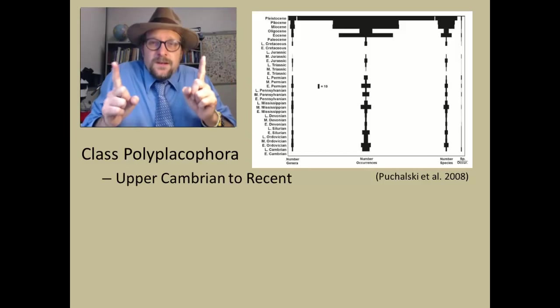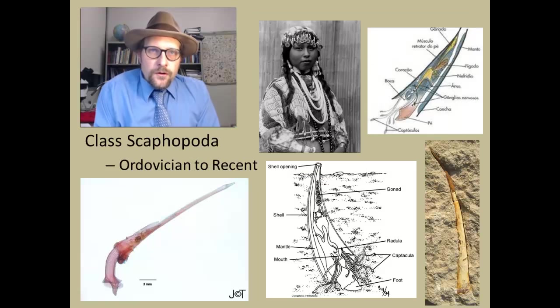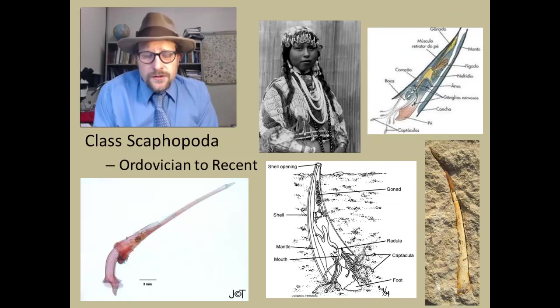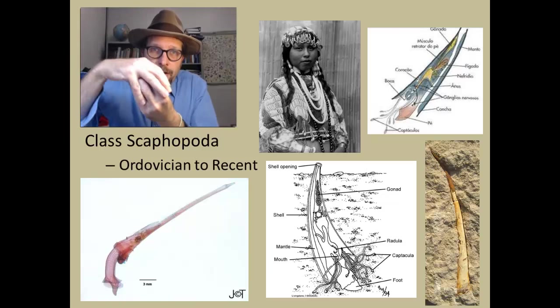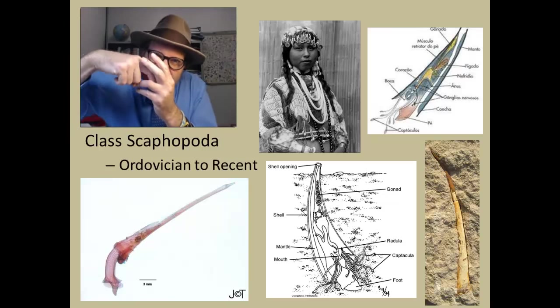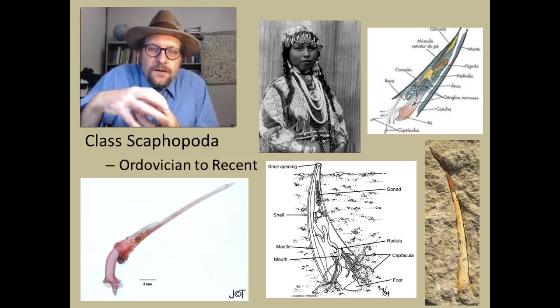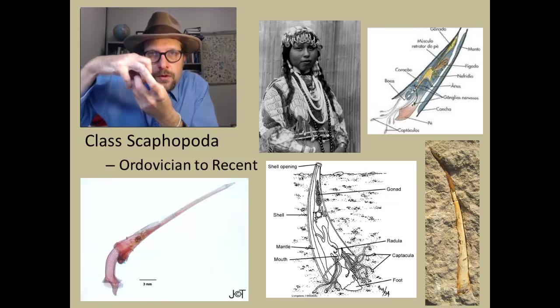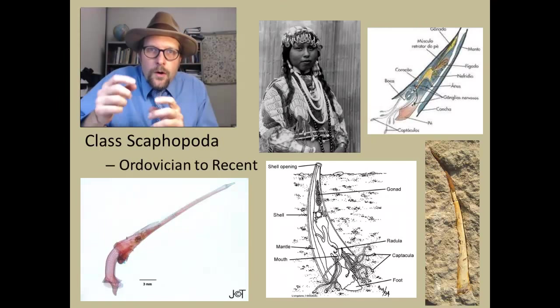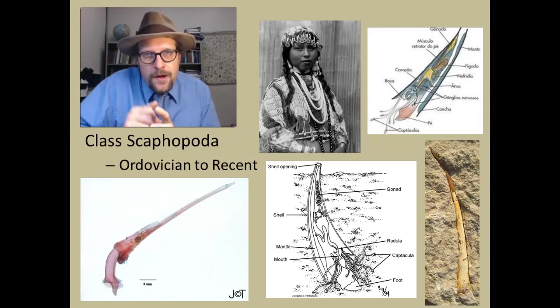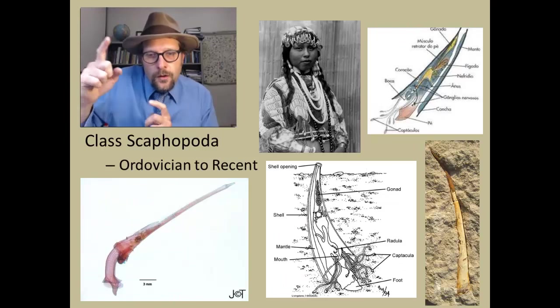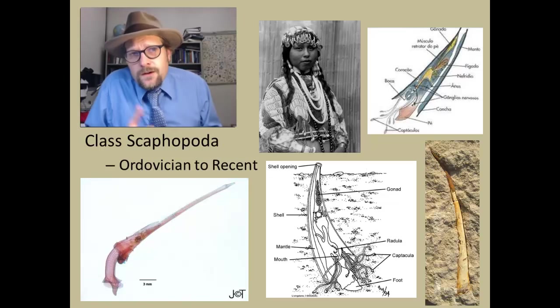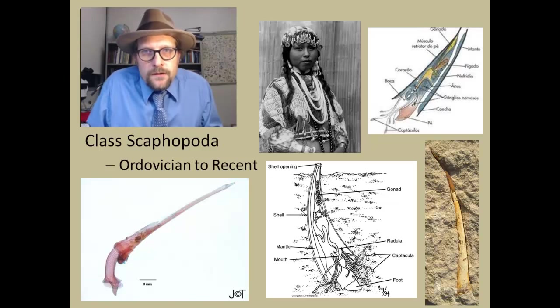The next group is the Scaphopoda, the tusk shells, known from the Ordovician to the modern. These are really unusual creatures that make their living burrowing down into deep marine mud. The mouth opens below as a foot digs down, with captacula, tentacle-like appendages that bring food to the mouth. The anus opens at the narrow opening at the top of the horned shell. These are common fossils, and here in Northeastern Utah I found them in the late Permian Park City Formation.